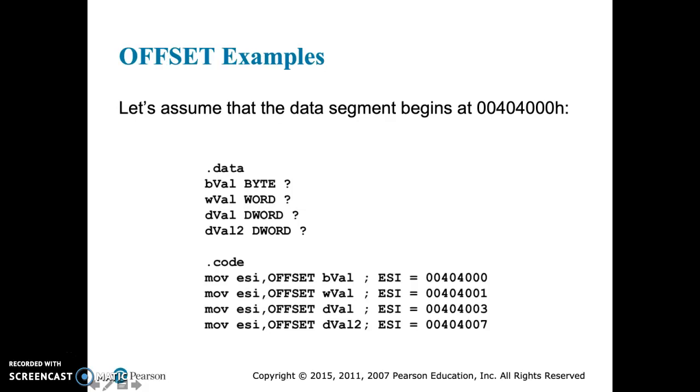The WVAL offset is 1. The DVAL, the first one, has offset 2, because the word is 16-bit. So it's essentially 2 bytes away.